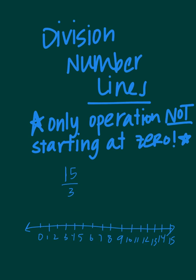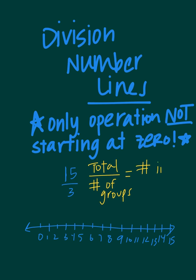For division number lines, these are the only number lines not starting at zero. For every other number line we started at zero and went either right or left. For division, I say: total divided by number of groups. In this case we have a total of fifteen and three groups, and that tells you the number in each group. I'm going to go all the way out to fifteen for my total. Now let's look at the number of groups — there needs to be three groups, and fifteen divided by three gives you five, so each group is going to have five in it.